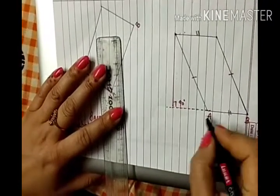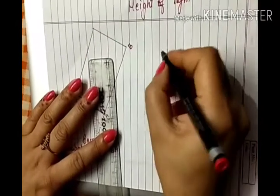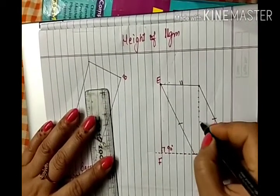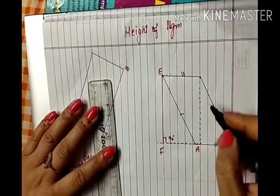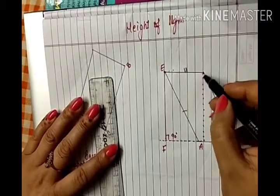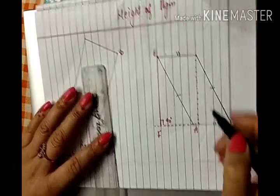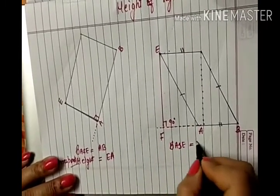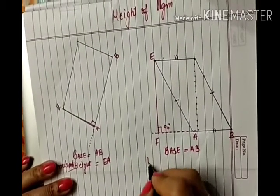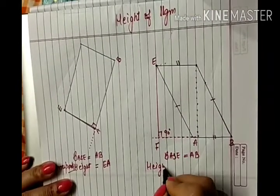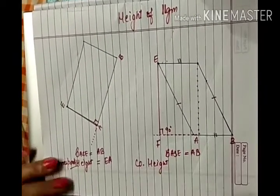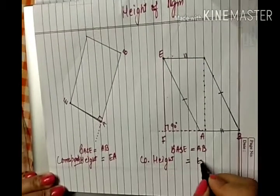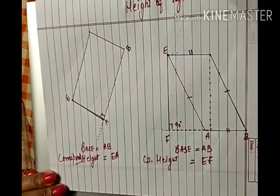So here the base is AB and the height is EF. Now look, this is also the height. This can't be the height. This is also the height. So here the base is AB and again we will write height, not the height, that is the short form is CO dot, corresponding height, that is EF.